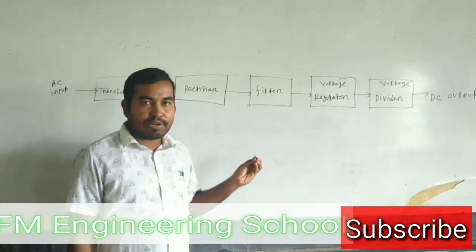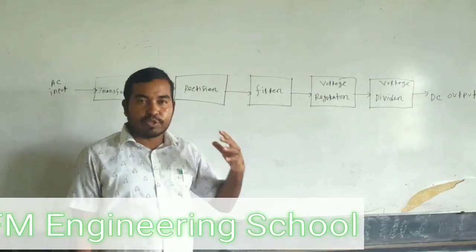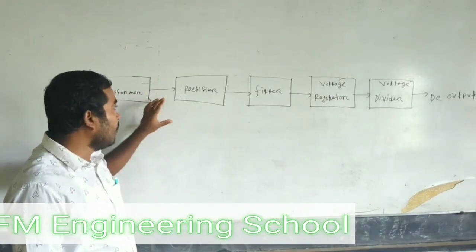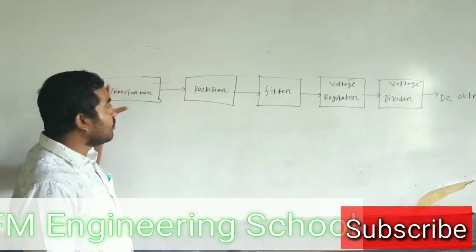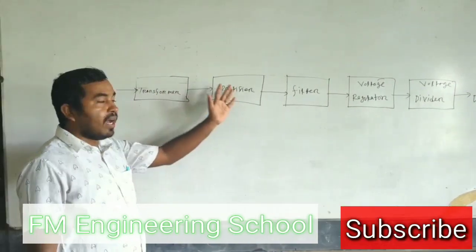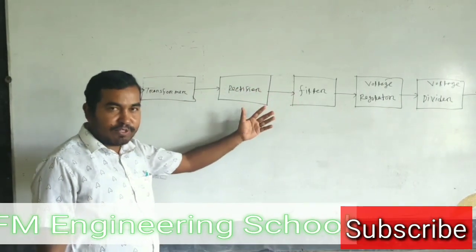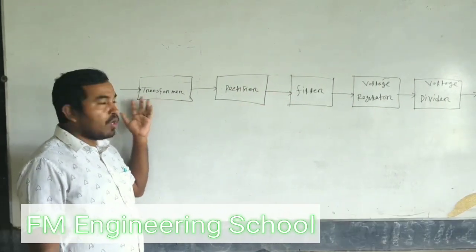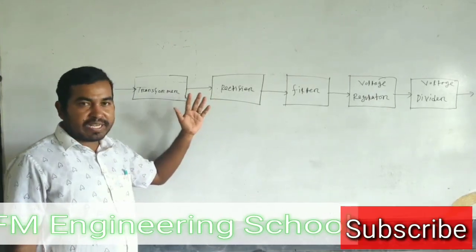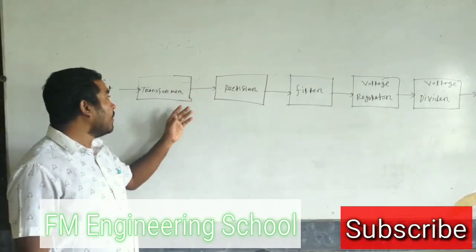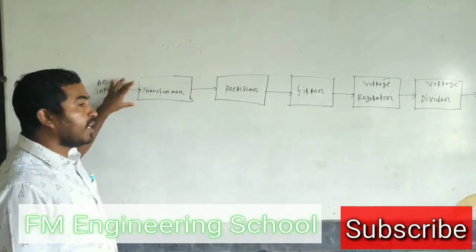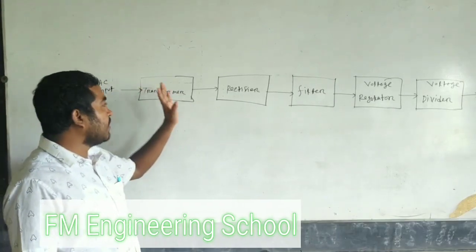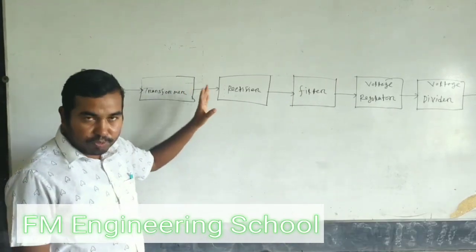The first step is to step down and test the output. We are going to get a DC output — a little more than the standard output — and we can use a step to test it.